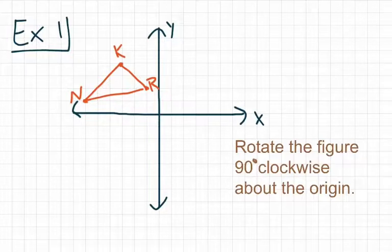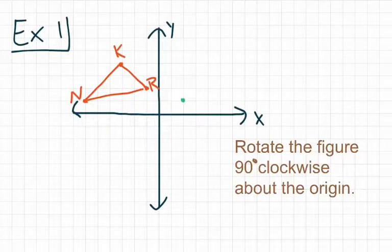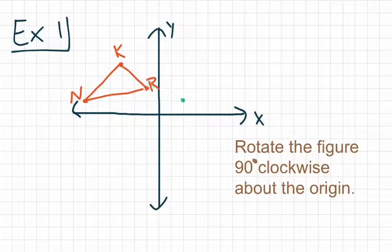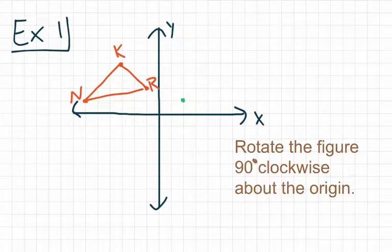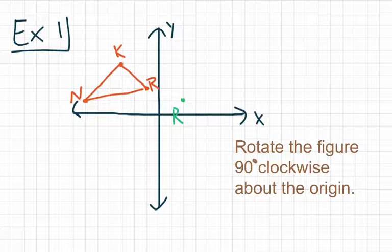we recognize that point R prime is now going to be at point 2 comma 1. Originally R is at negative 1 comma 2. R prime, however, is going to be at 2 comma 1. And so that's where our R prime is going to go.